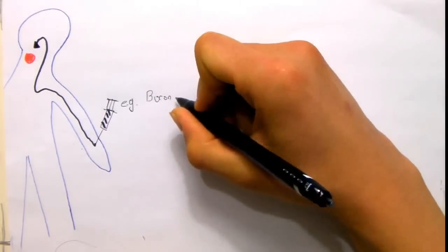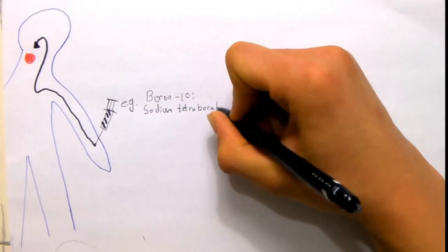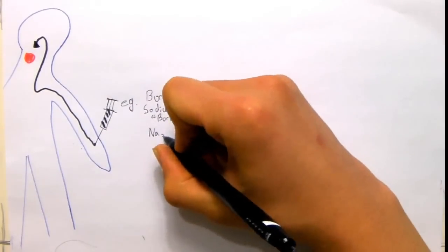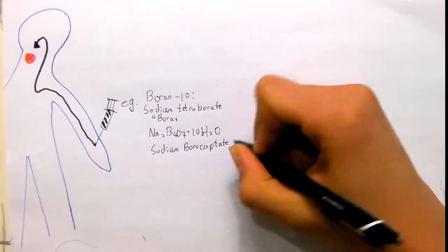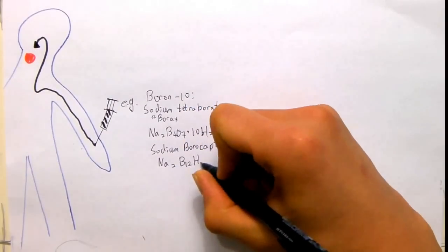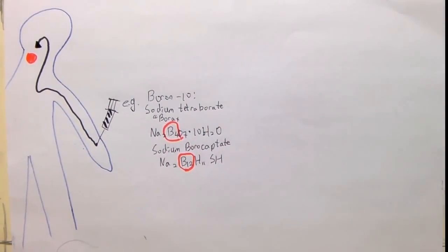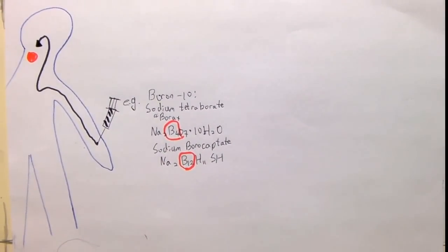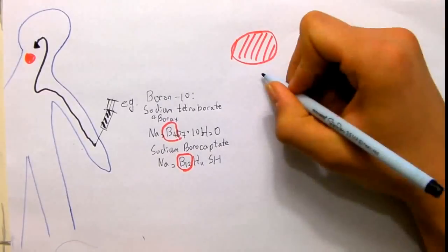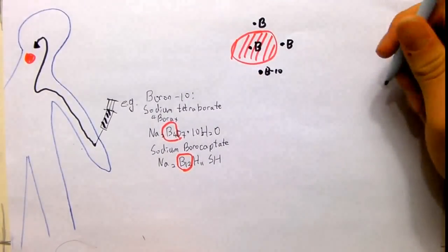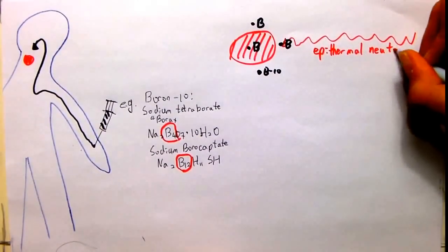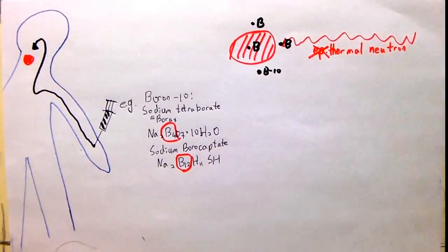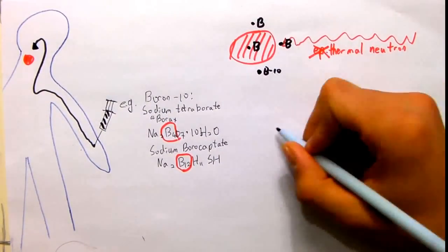BNCT involves injecting a tumour-seeking compound tagged with the isotope boron-10, for example sodium tetraborate or sodium borocaptate. After allowing the substance to concentrate at tumours, a beam of epithermal neutrons is directed at this area. Capturing a neutron will induce fission in boron-10. The products of fission are an alpha particle and a lithium-6 ion. These will ideally kill the tumour cell.